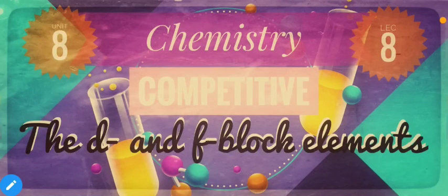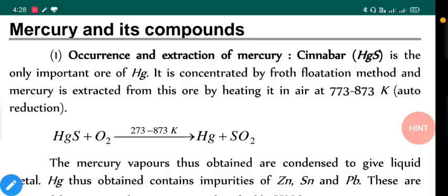Hello students, welcome to the 8th lecture of d and f block elements competitive. Today we are going to discuss mercury and its compounds. Occurrence and extraction of mercury: Cinnabar (HgS) is the only important ore of mercury.